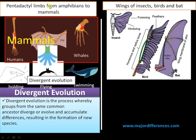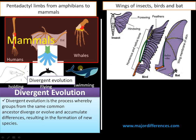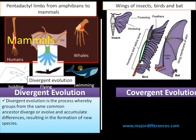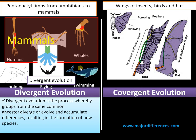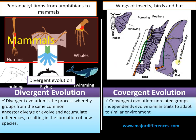The same structure has diversified or evolved to perform different functions under different environmental conditions, leading to the formation of new species. This is divergent evolution. Whereas in the case of convergent evolution, insects, birds, and bats are all unrelated groups.